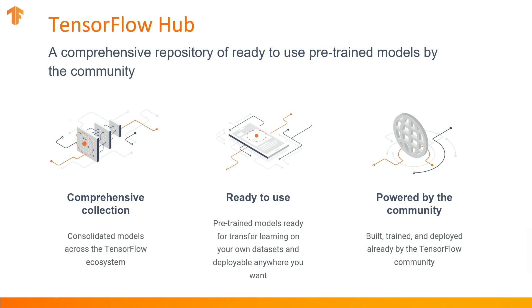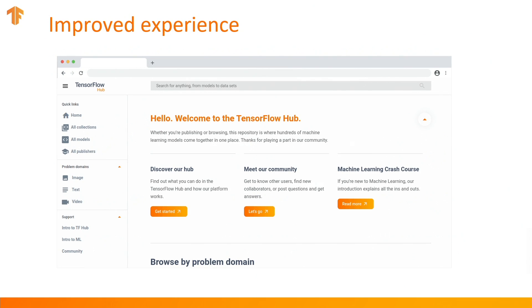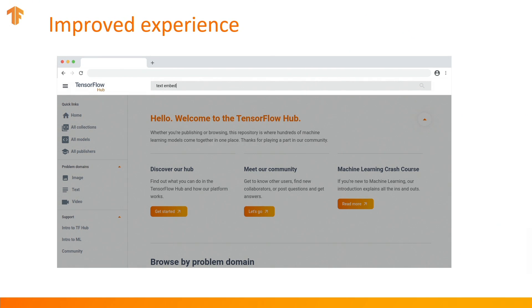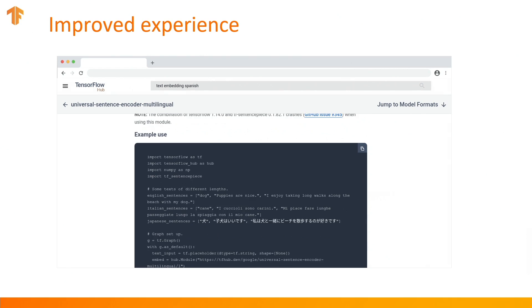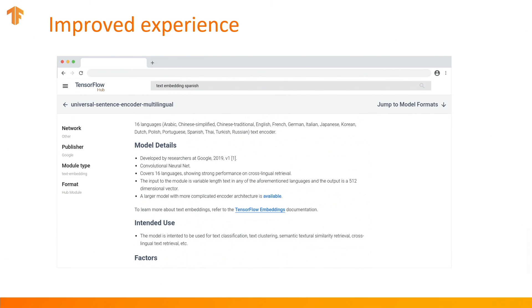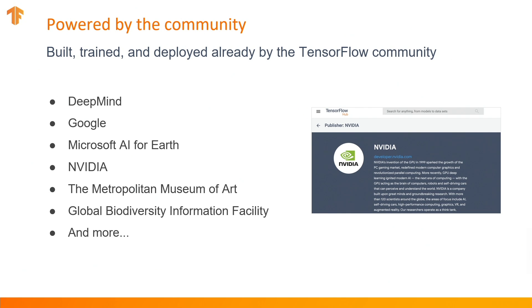If you're not looking to build models from scratch and want to reduce computational cost, TensorFlow has always made pre-trained models available through TensorFlow Hub. Today, we're excited to share an improved experience of TensorFlow Hub that's much more intuitive, where you can find a comprehensive repository of pre-trained models in the TensorFlow ecosystem. This means you can find models like BERT and others related to image, text, video, and more, ready to use with TensorFlow Lite and TensorFlow.js. TensorFlow Hub is also hosting more pre-trained models from the community, including curated models by DeepMind, Google, Microsoft's AI for Earth, and NVIDIA.